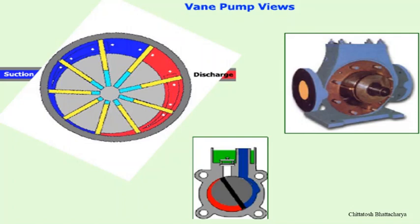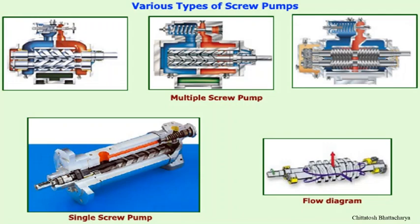Screw pumps are special type of pumps where two or three screws are fitted within the casing. There may be one driving screw and one driven screw. When these screws rotate, the fluid is sucked axially across the screw and then discharged from the end of the transmission path through the discharge duct — axial suction and radial discharge across the screw.